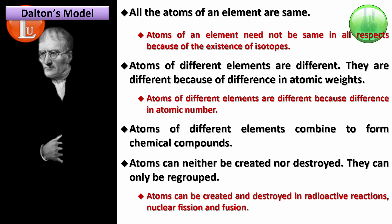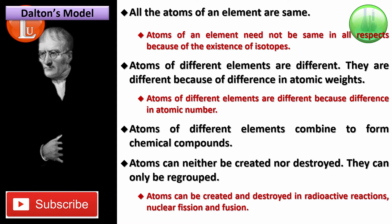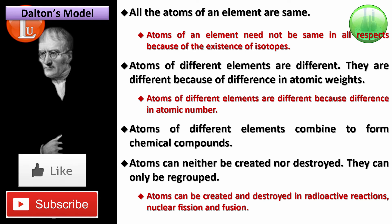That is the end of this part of the video. This is part one, where we briefly discussed the ancient Greek model and Dalton's model of an atom. In the next video, we're going to talk about the discovery of electrons — how electrons were discovered — in part two. If you have any questions, queries, or doubts, please drop them in the comment section below. If you haven't subscribed to this channel, please do subscribe. You'll get more lesson videos of physical chemistry, organic chemistry, and inorganic chemistry. If you like this video, please hit the like button. This is Kalyan Kumar signing off — have a great day and thank you for watching.